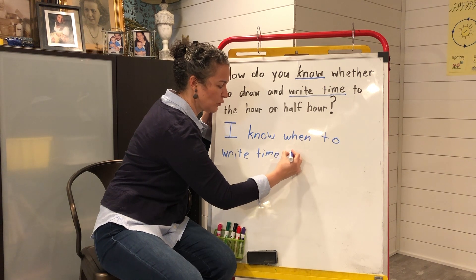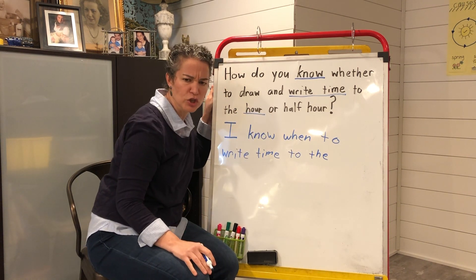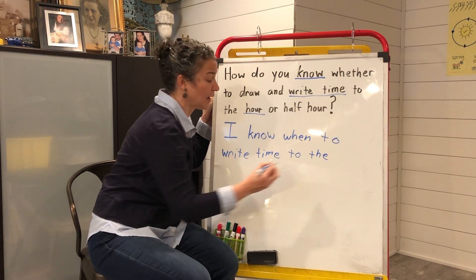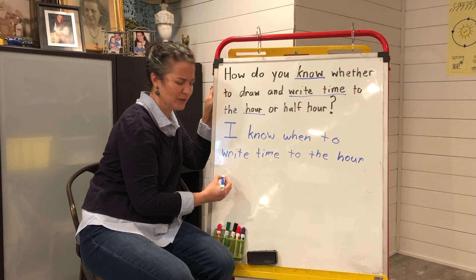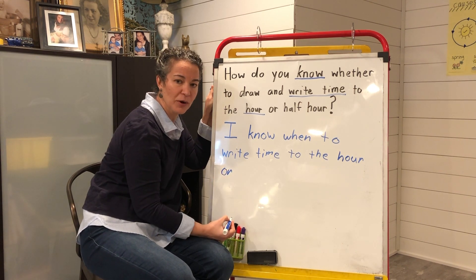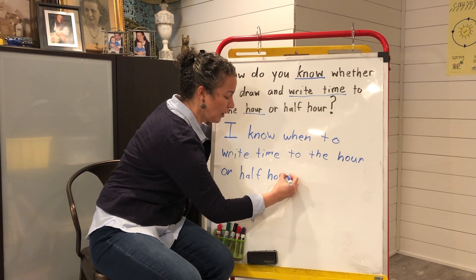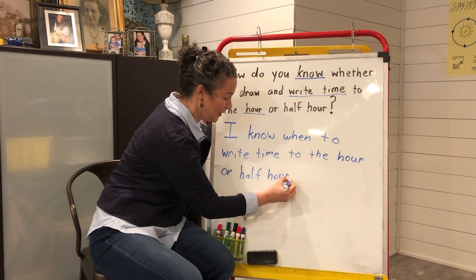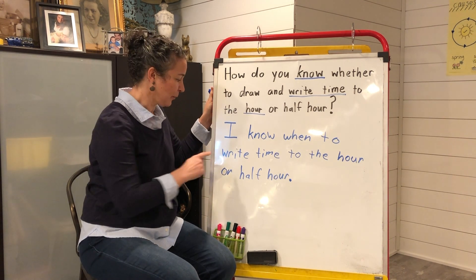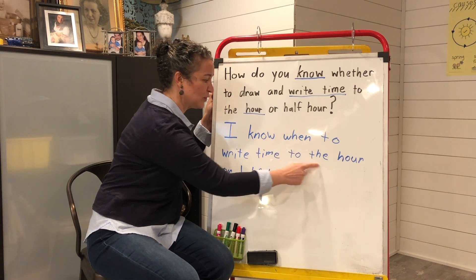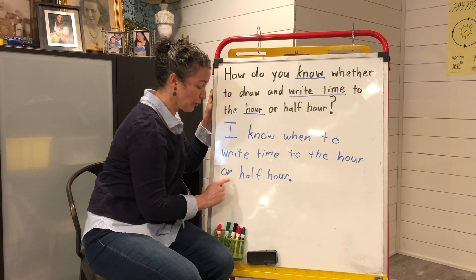To the hour — let me hear you spell it. T-H-E. Hour — remember, it's a tricky word because we don't hear the H. Or — H-A-L-F hour, H-O-U-R. And what goes at the end of that sentence? You are correct, I need a period. Let me read my I can statement, then you're going to read it with me: I know when to write time to the hour or half hour. Read it with me: I know when to write time to the hour or half hour. It means if I read a word problem, I would know how to write the time — eight o'clock or eight-thirty — differently.